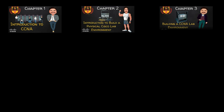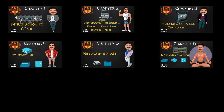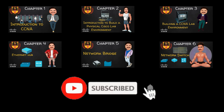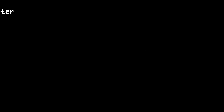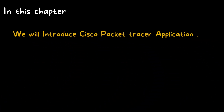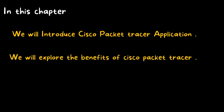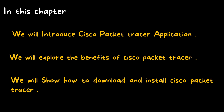Welcome to Irash Academy, an unlimited learning platform. Please subscribe to the channel for more videos. Welcome to CCNA 200-301: Implementing and Administering Cisco Solutions, Chapter 11 — Cisco Packet Tracer. In this chapter, we will introduce the Cisco Packet Tracer application, explore its benefits, and show how to download and install it.